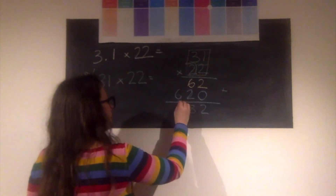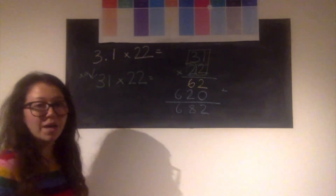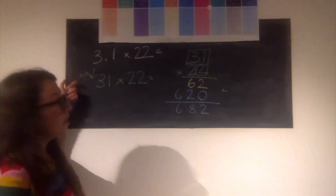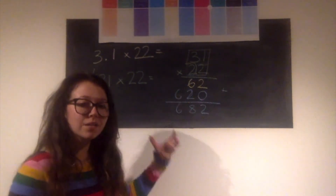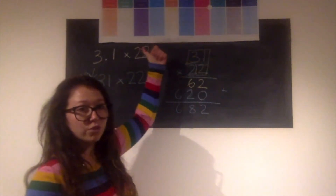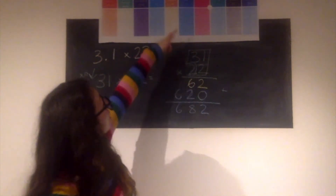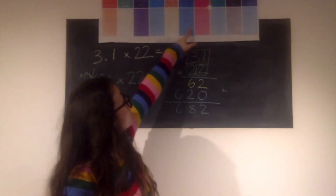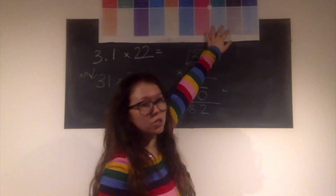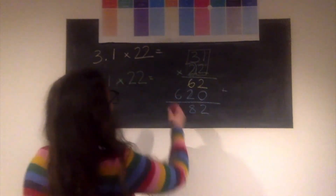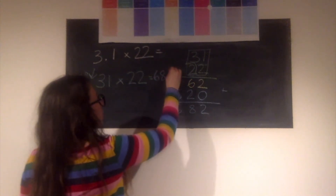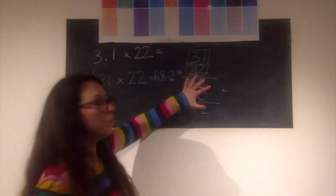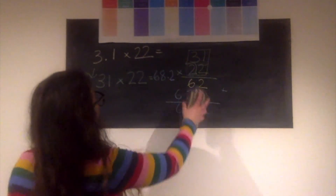But remember, that isn't our final answer because we made 3.1 ten times bigger. So we need to make our answer ten times smaller — divide by 10. All digits shift one place to the right, giving 68.2. That's method one. There's another way: we can do this using the column method but keeping the decimal in, and that's what I'm going to show you now.